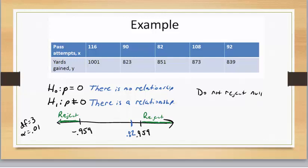So when we say that we're not going to reject the null, we're saying that we agree with the null hypothesis. And so our conclusion here would be that there is no relationship.